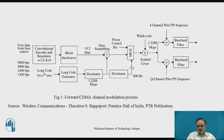In the diagram, four different data rates are shown on the left-hand side at various speeds from 1200 to 9600 BPS — that is, the user data from the base station. It goes to the block interleaver, data scrambling, and then to the multiplexer. On the other side, it goes to the decimator where the frequency is adjusted based on requirement, going to the symbol cover, with two separations: the I channel and the Q channel using Pilot PN sequences.